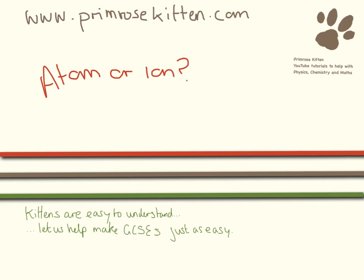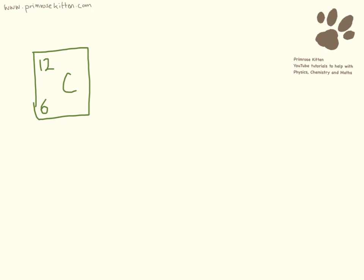We use the words atoms and ions a lot, but what is really the difference? So on your periodic table, you're gonna see a box like this. It's gonna have a letter in, and it's going to have some numbers in. This is talking about an atom.